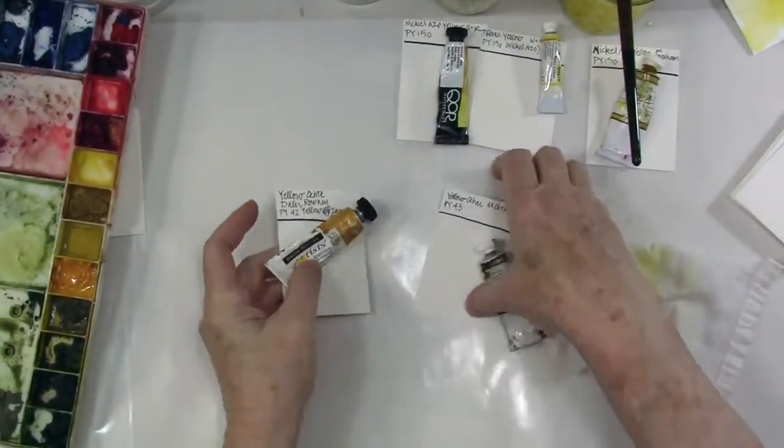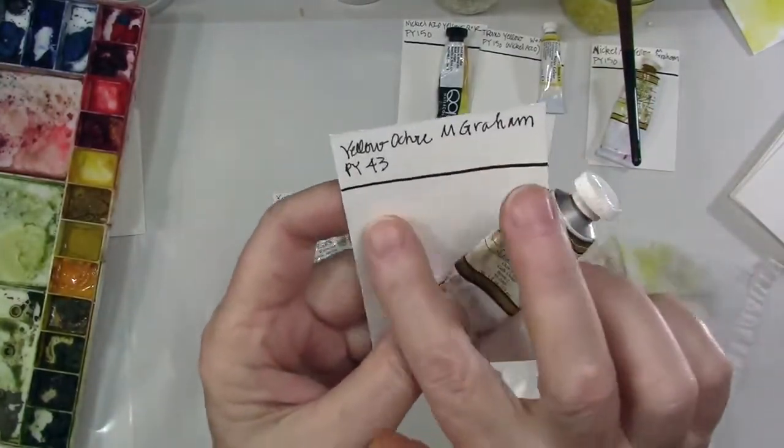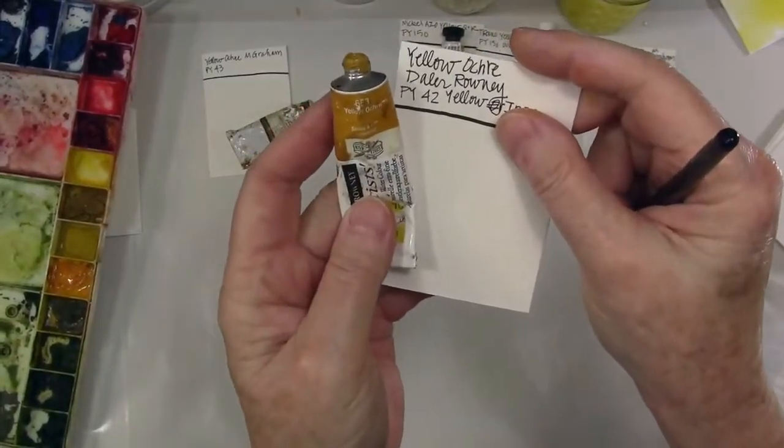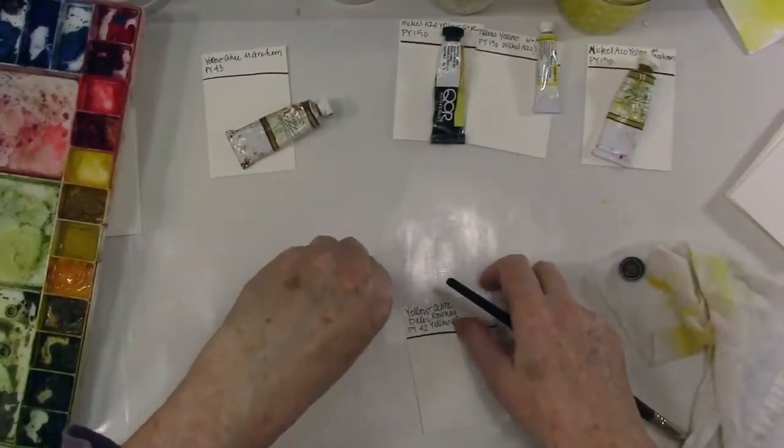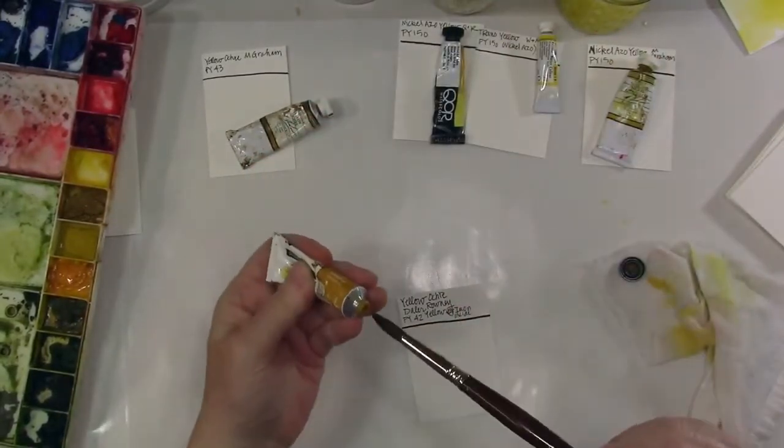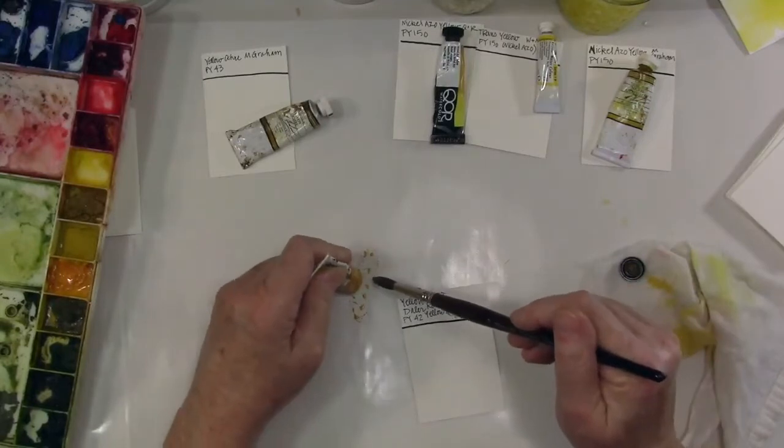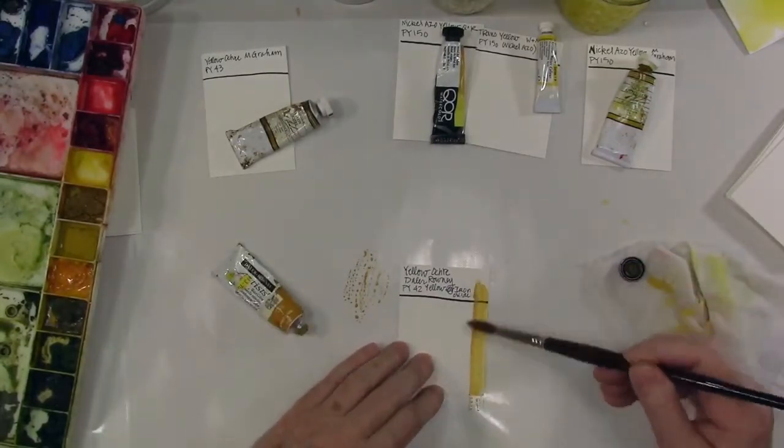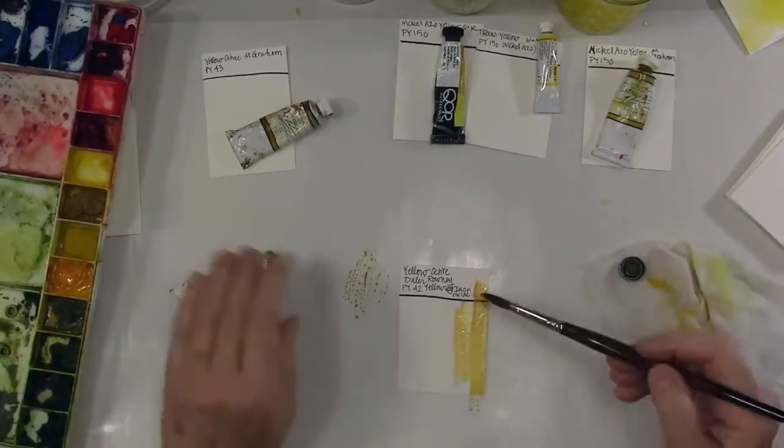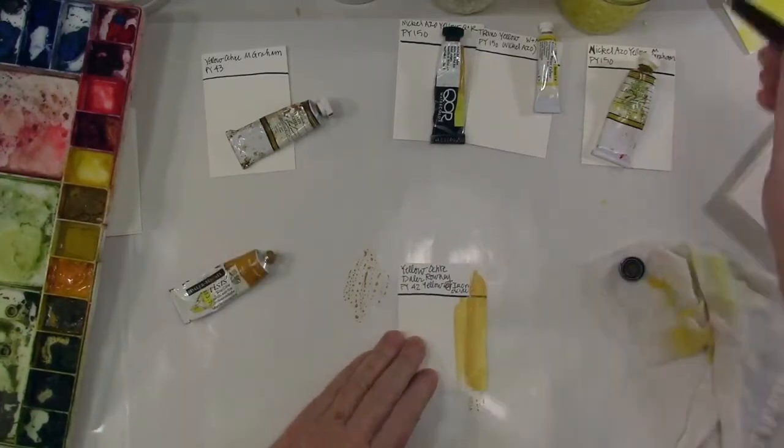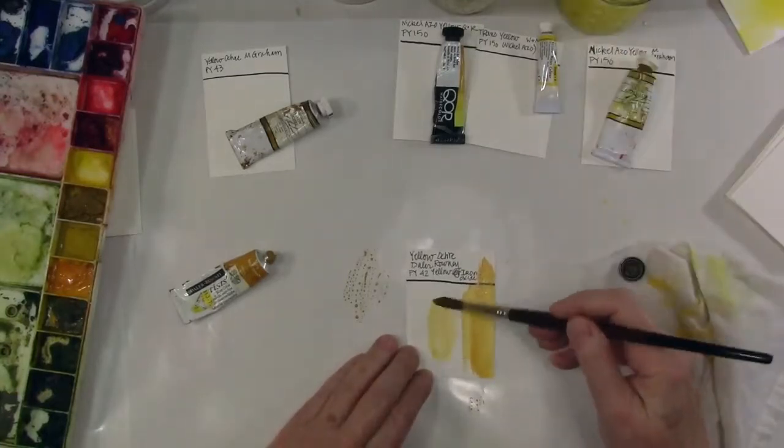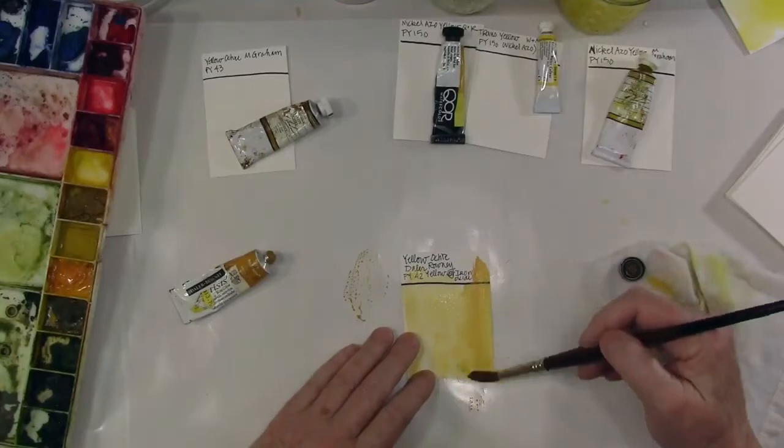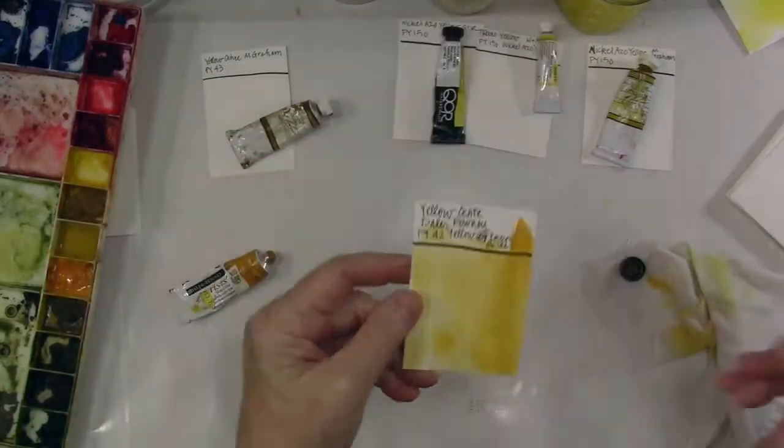Now here we go with the yellow ochres. This was a hand-me-down from Daylor Roney and from M Graham. I have had this on my palette. I do use this color. It's a warm, earthy ochre yellow and it's a good color. It's a very valuable color because you can mix it with other yellows and greens and it really provides a lot of bang for your buck because it calms down a color like a brighter blue. That's a really nice, that's a really good color.